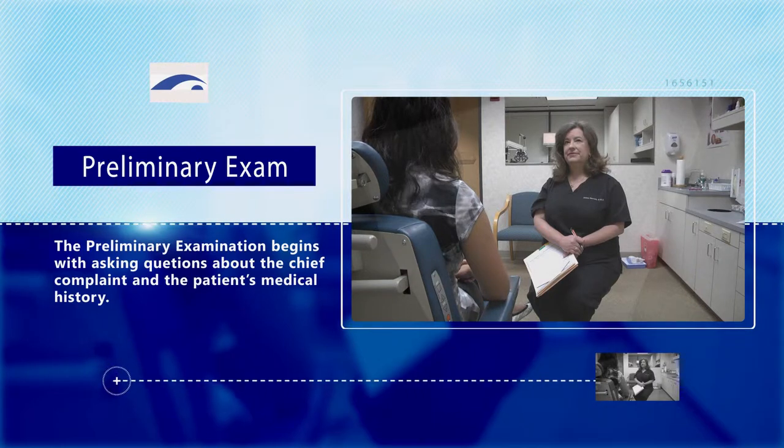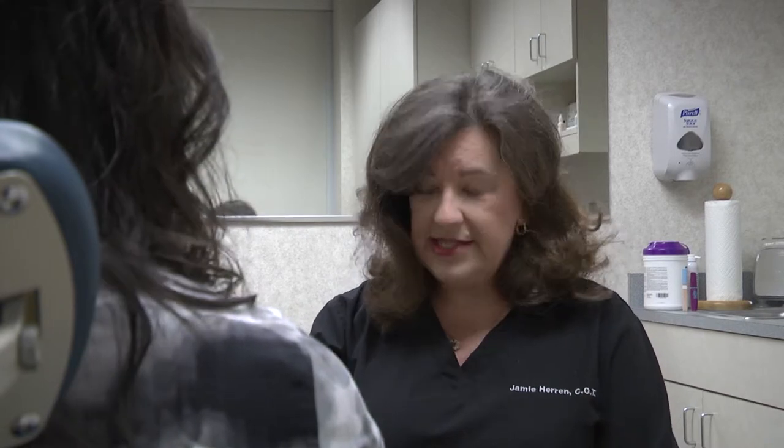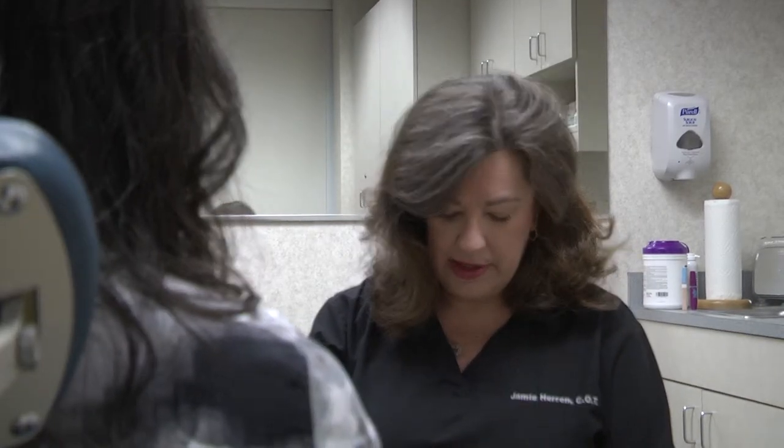The information process begins when the patient is called into the exam room. The technician should do a brief assessment of the patient's face and body. Does the patient have a droopy lid? Is he or she not able to walk without assistance to the exam room? Does the patient seem to be paralyzed on one side?